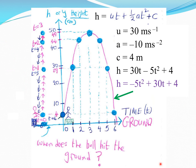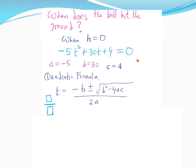When does the ball hit the ground? The ball hits the ground when h = 0. We know it hits after around 6 seconds, but let's be precise. We set −5t² + 30t + 4 = 0 and apply the quadratic formula: t = [−b ± √(b² − 4ac)] / (2a), where a = −5, b = 30, c = 4.